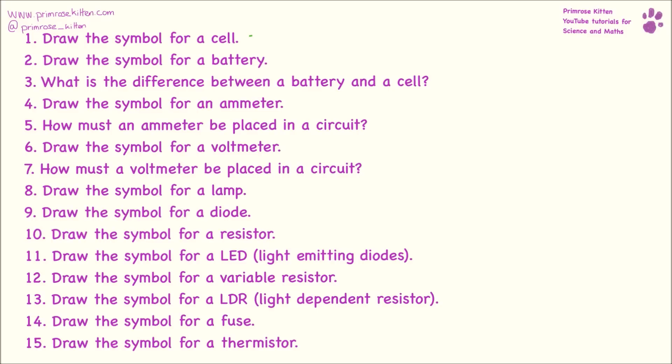Draw the symbol for a cell. Cell. Battery. The difference between a cell and a battery is cell is just one, whereas battery is more than one cells put together. Symbol for an ammeter. Where must an ammeter be placed in circuits? It must be placed in series. It will not work unless it's placed in series.